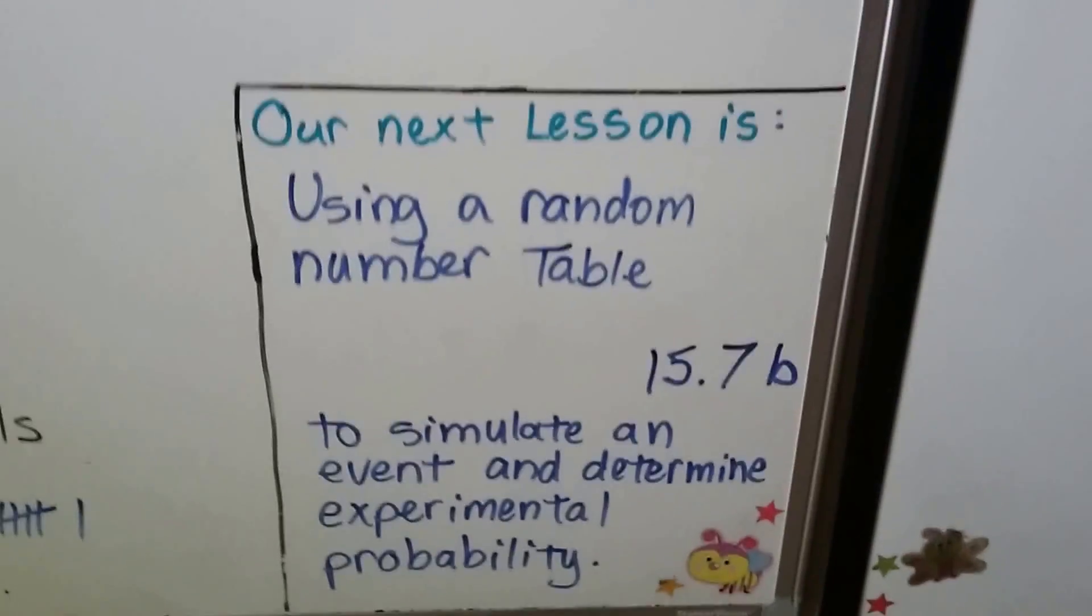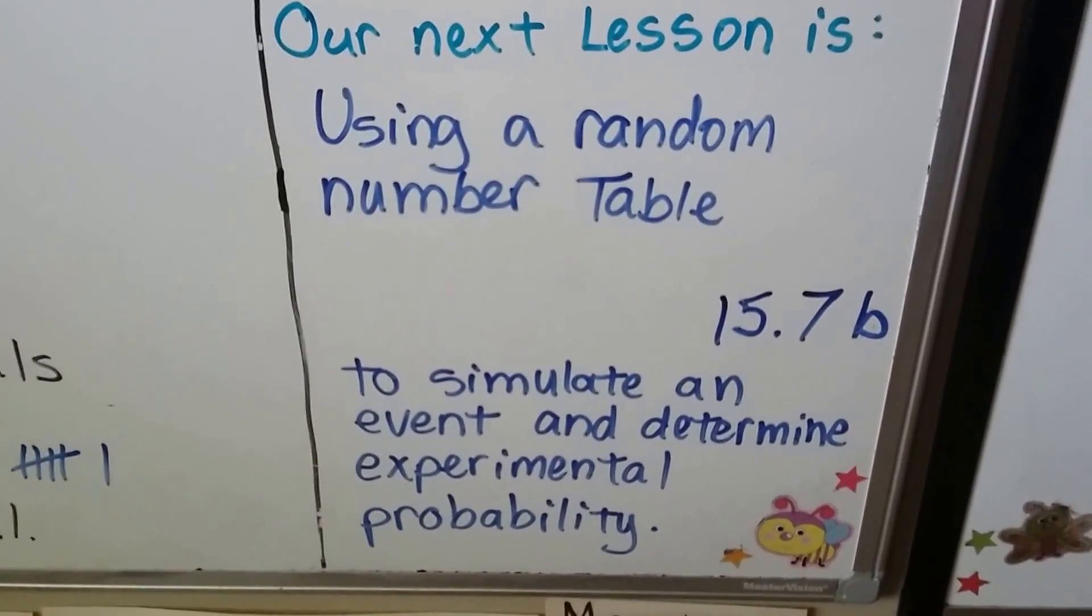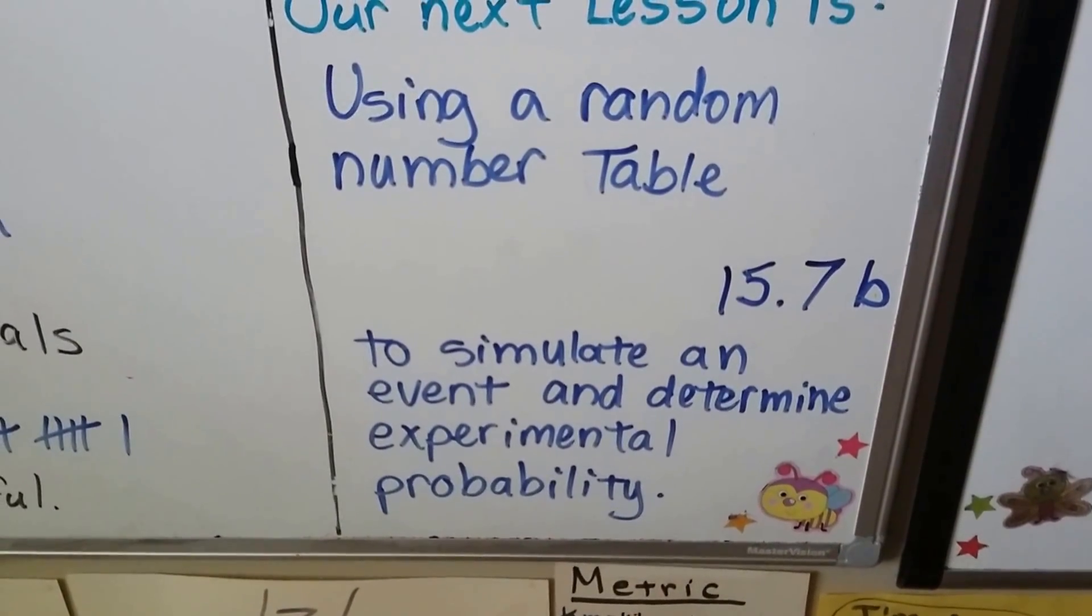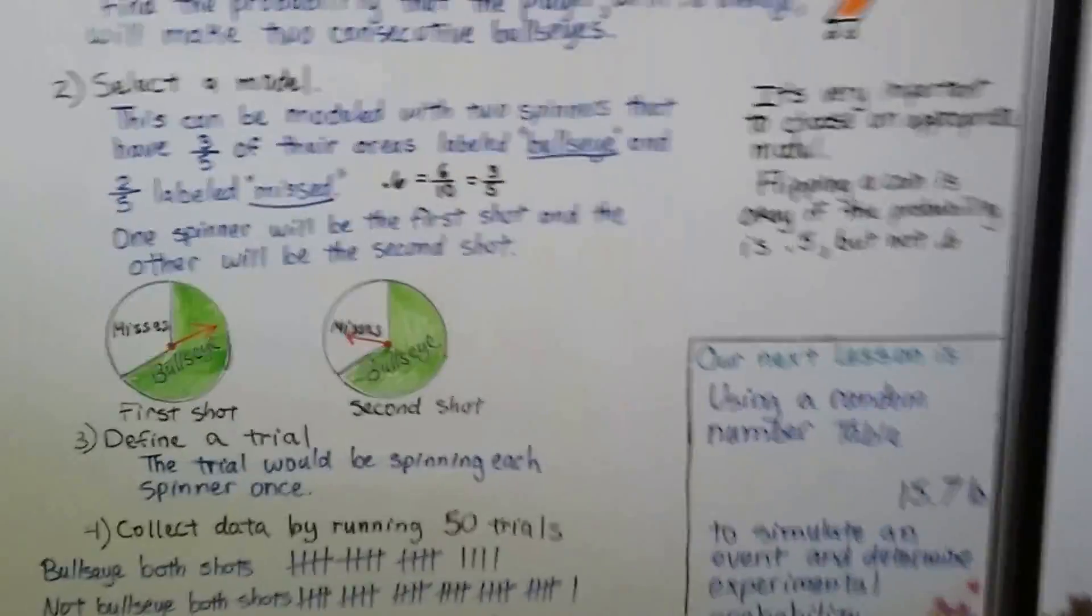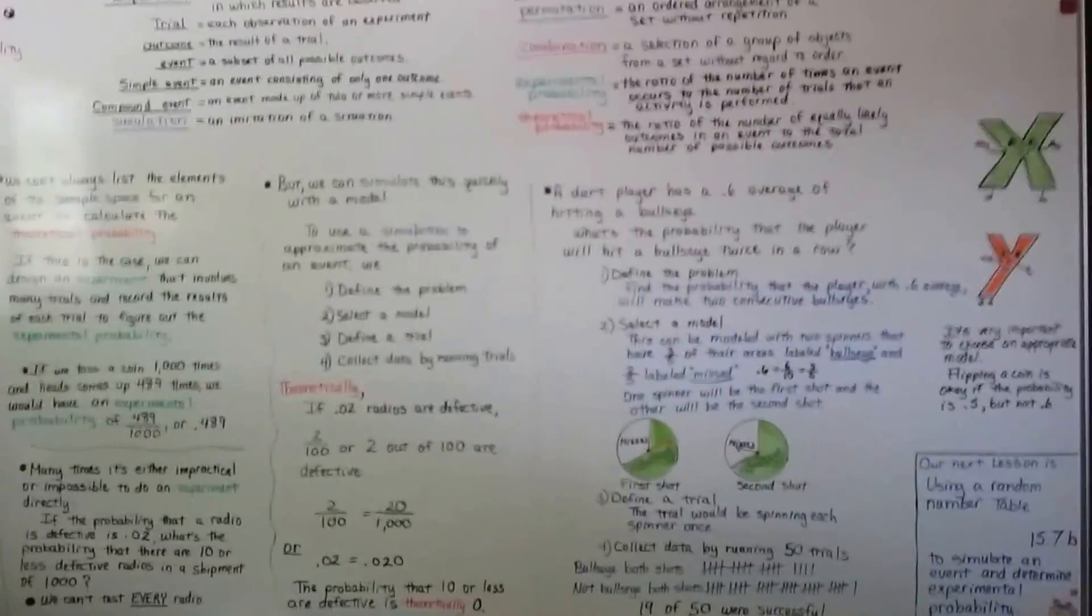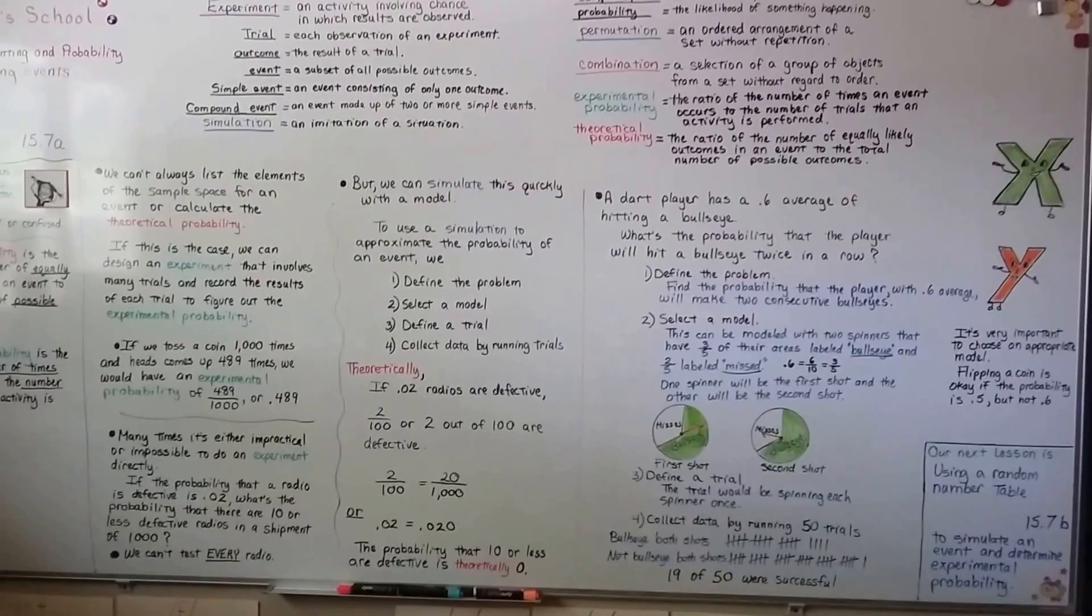Our next lesson is using a random number table. It's going to be 15.7b. We're going to use a random number table to simulate an event and determine experimental probability. So keep trying. I'm really proud of you, and I hope you understood what we talked about, and I'll see you next time. Bye.